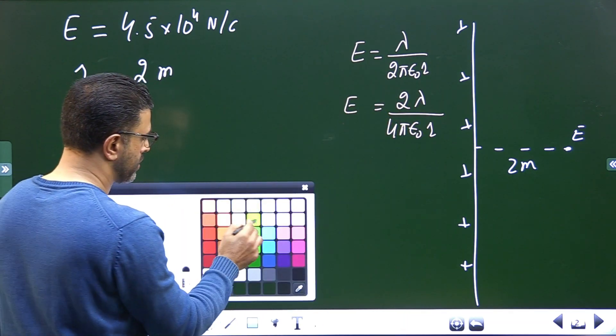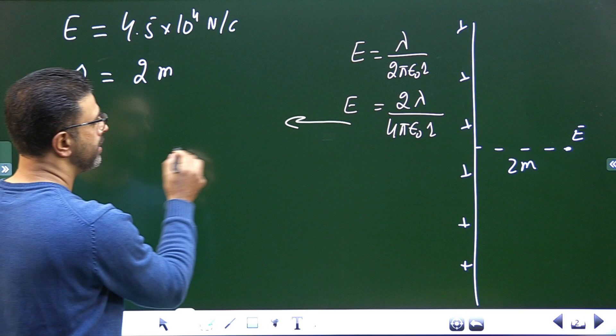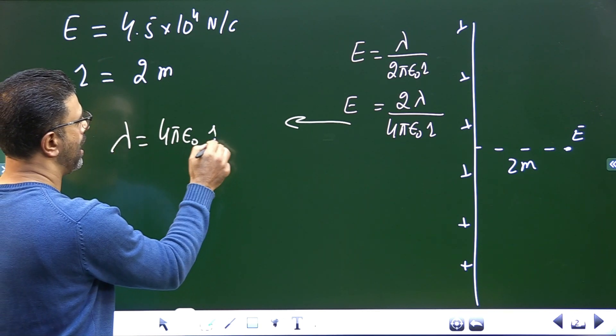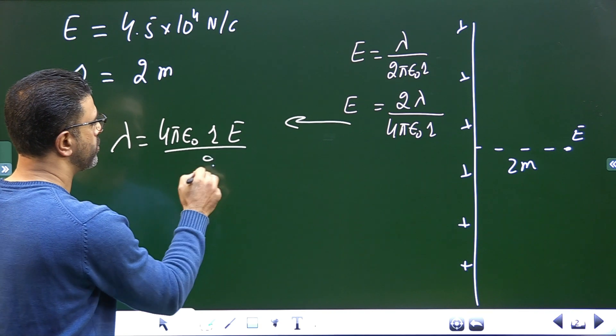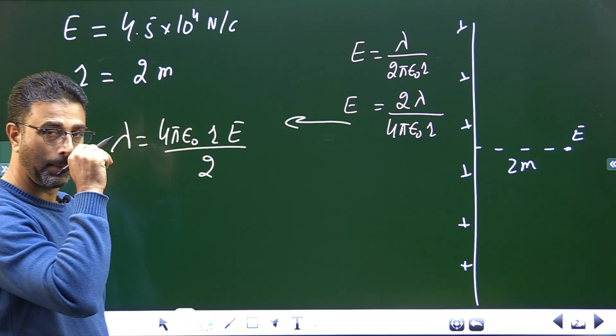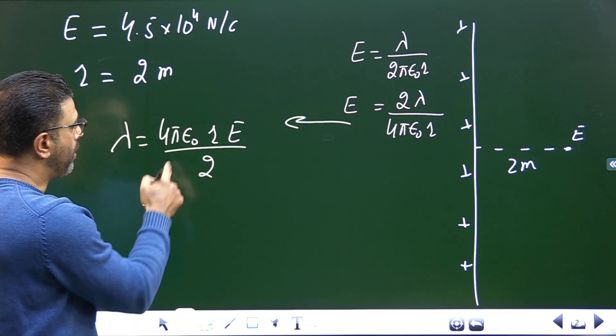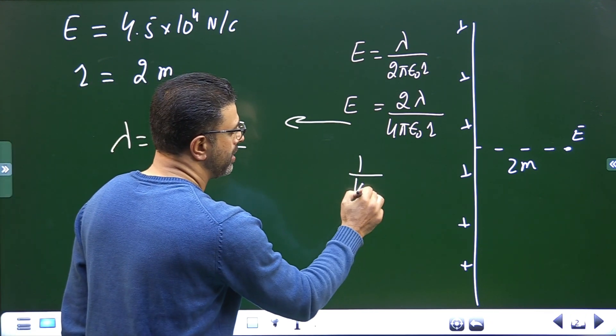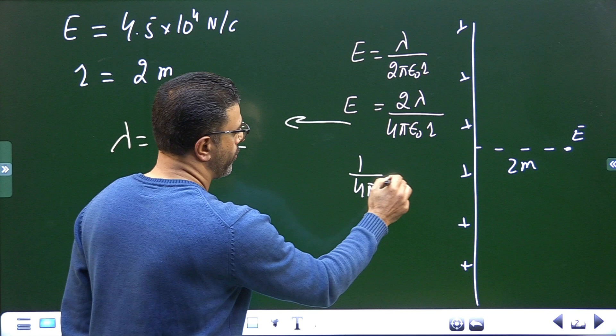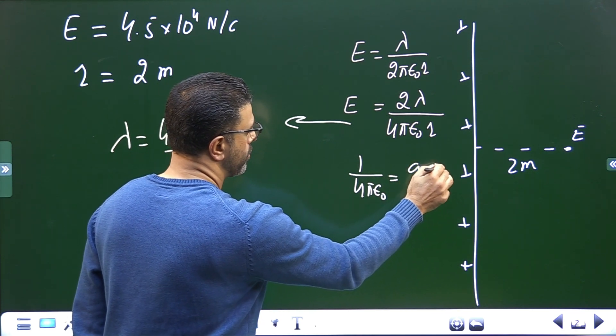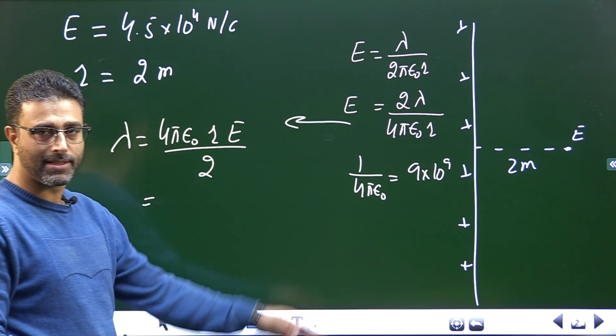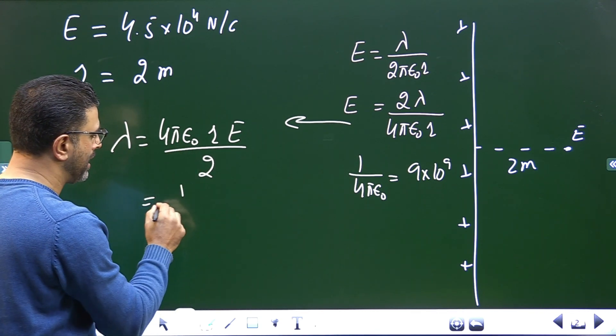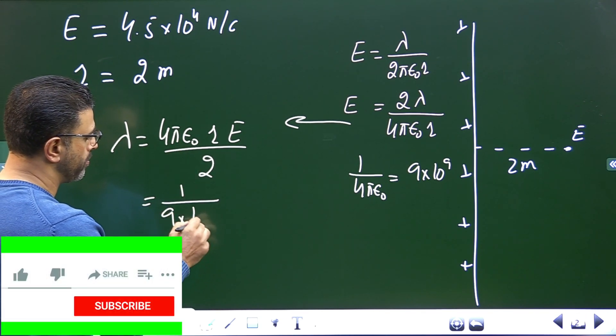Lambda is equal to 4 pi epsilon 0 r into E divided by 2. Now 4 pi epsilon 0, you must be aware that inverse of 4 pi epsilon 0, 1 by 4 pi epsilon 0, is 9 into 10 to the power 9 in SI system. So 4 pi epsilon 0 r is 1 divided by 9 into 10 to the power 9.